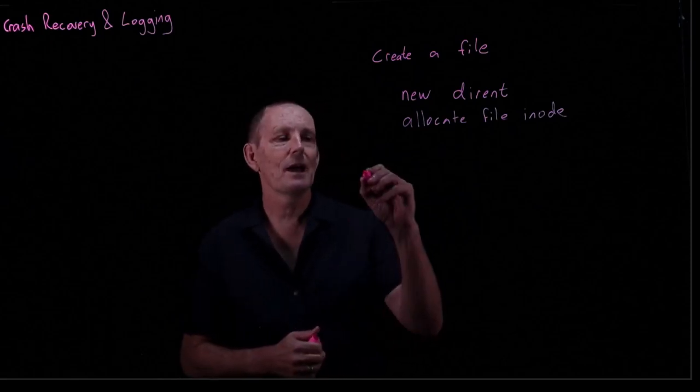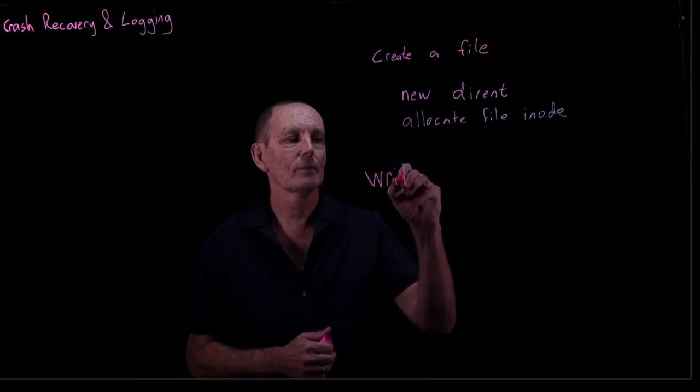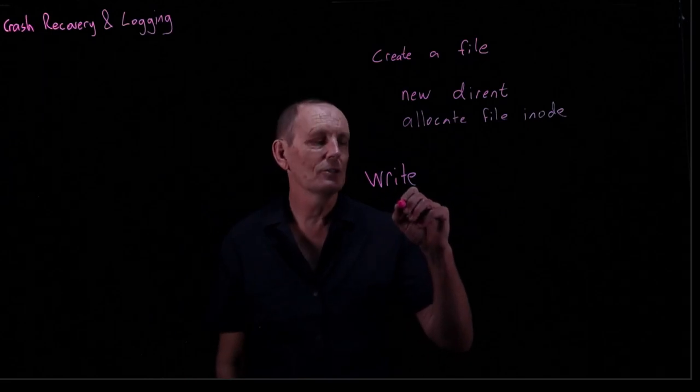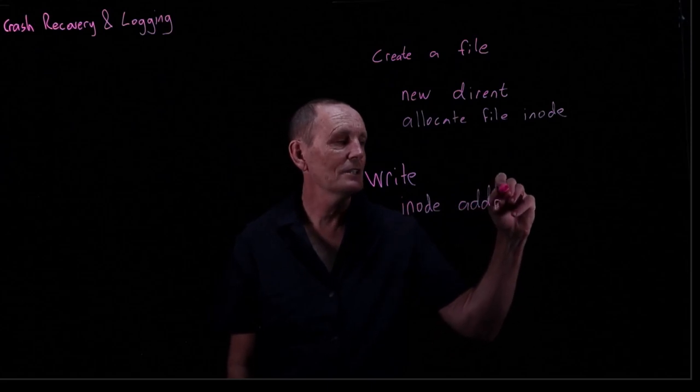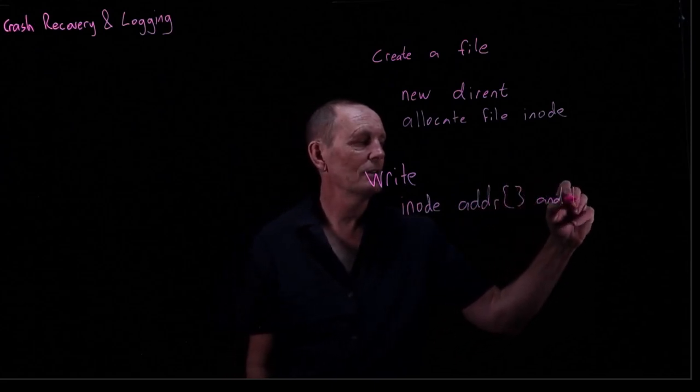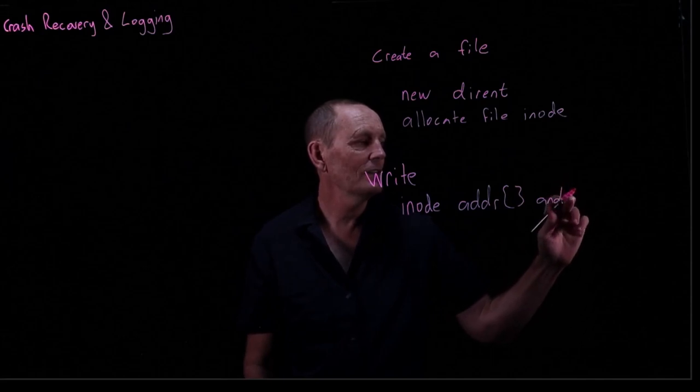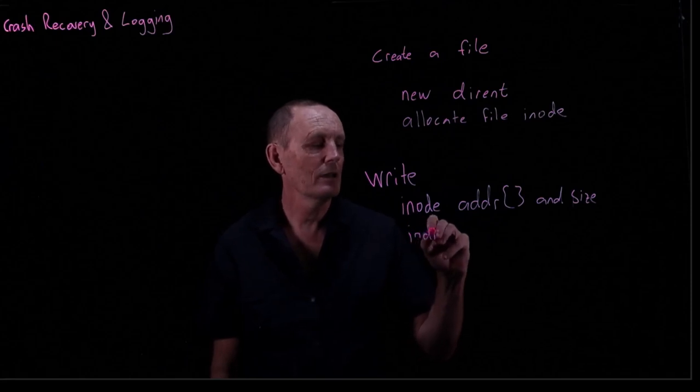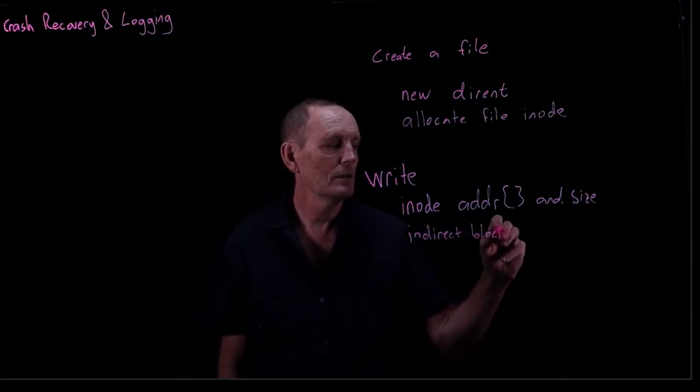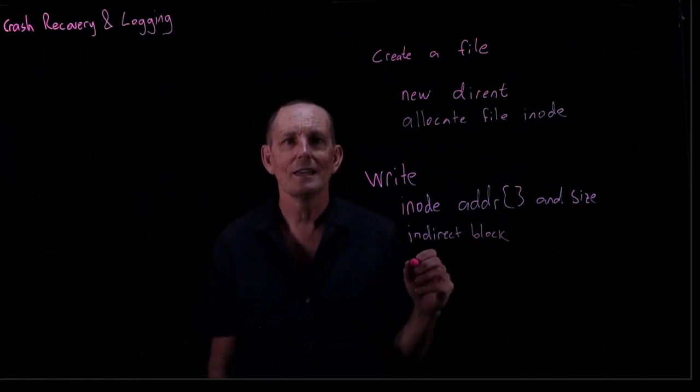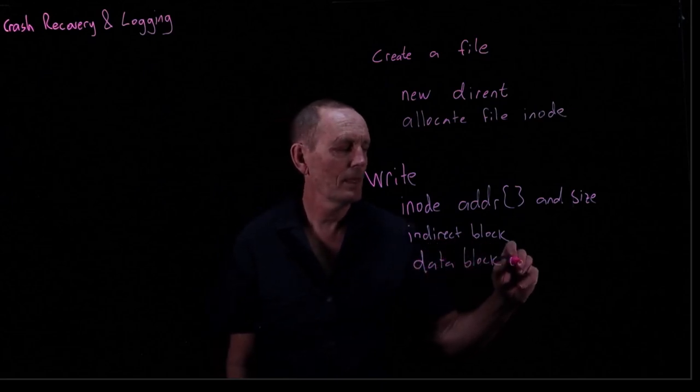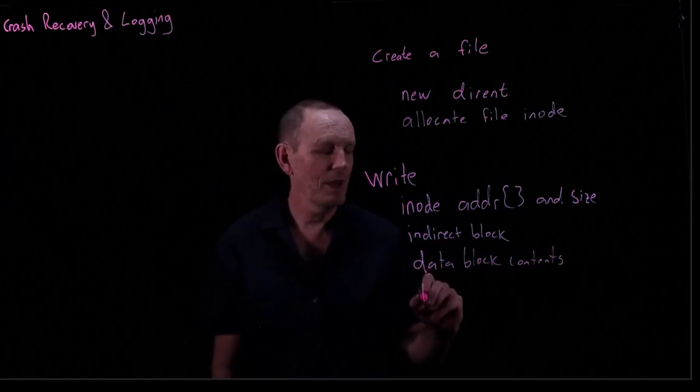Other examples of what might happen. Let's say we do a write. So what actually is written during our write? So we've got to write, let's say we're allocating a new block. So we've got the addresses in the inode themselves, and we have the size. We've got the indirect block. We've got the contents of the data block. So the data block contents. And we've also got the block-free bitmap.